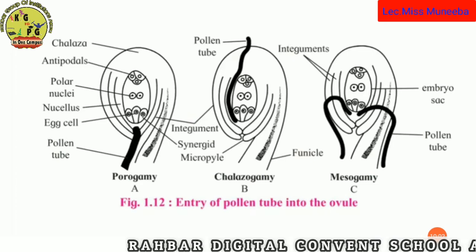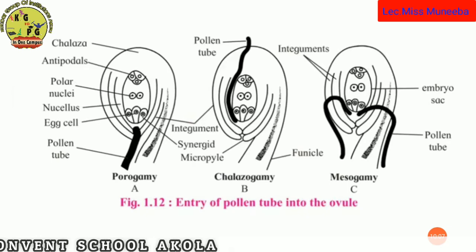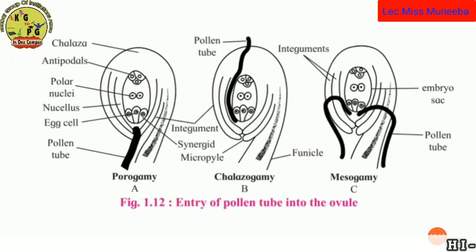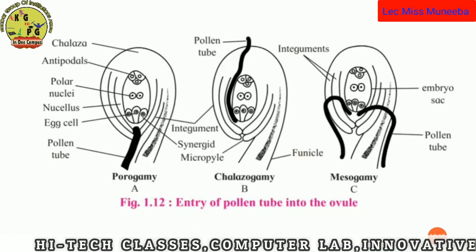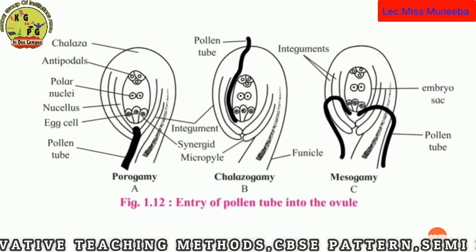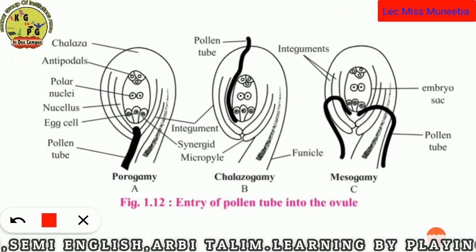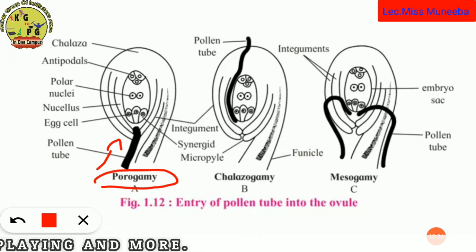The first type is the entry of pollen tube into the ovule through the micropylar end. When the pollen tube enters through the micropyle and the male gametes enter from the micropylar end, this is called Porogamy. Gametes means fusion — so when entry is through the micropyle, it is called Porogamy.